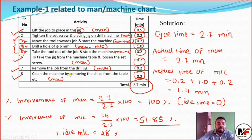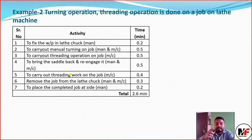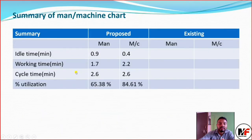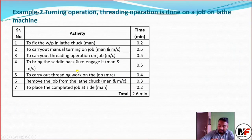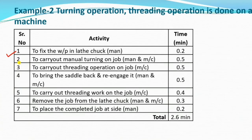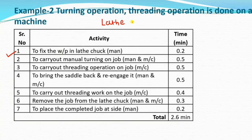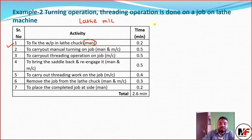We are moving to Example 2. Pay close attention — here we have to draw the man-machine chart and prepare a summary. The operation is on a lathe machine. The first operation is to fix the workpiece in the lathe chuck, which requires man involvement. The cycle time for this example is 2.6 minutes. The actual time of the man starts with the first operation: to fix the workpiece in the lathe chuck, which is the man's work.